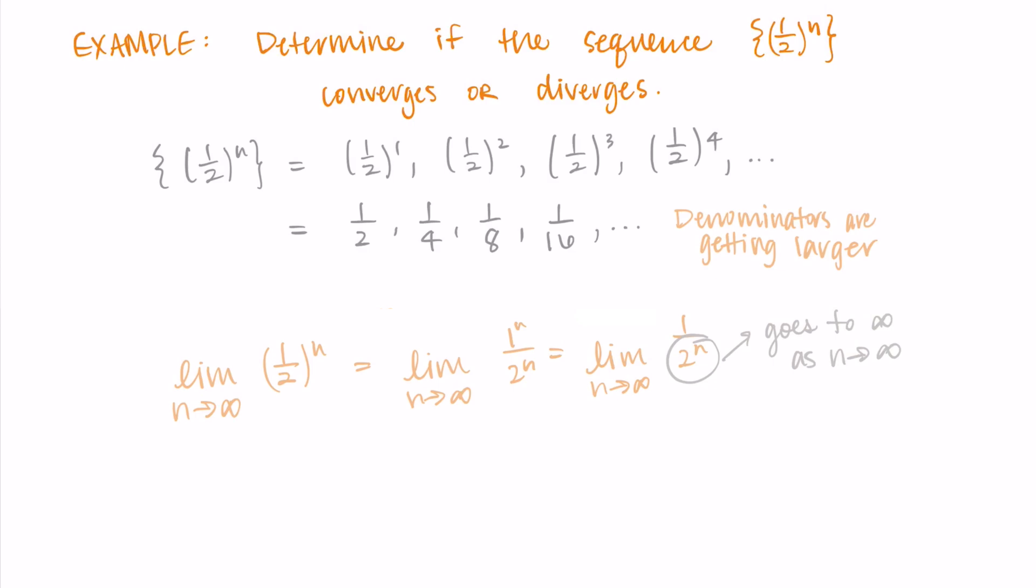This means we're doing 1 divided by something that's getting bigger and bigger and bigger. So as n approaches infinity, we're dividing 1 into more and more and more pieces. So this is going to 0. It's very similar logic to the limit of 1 over n as n approaches infinity. So this matches our intuition that these terms of the sequence are getting closer to 0 as n approaches infinity. And so we say that the sequence 1 over 2 to the n converges to 0.